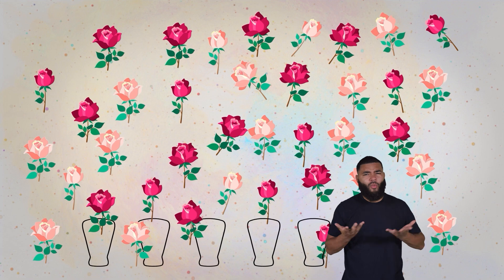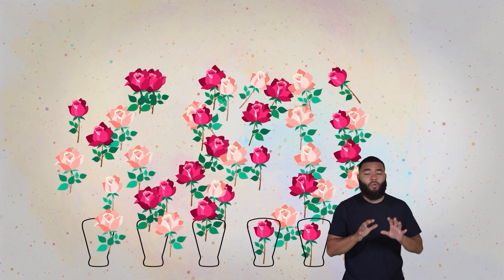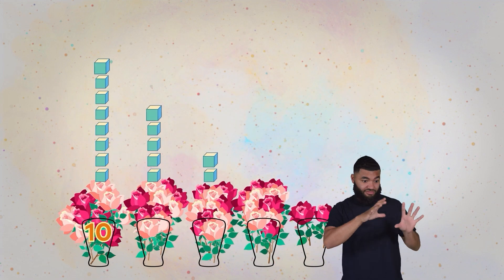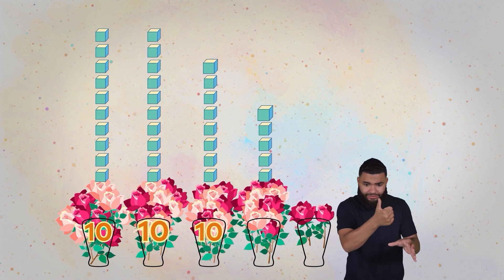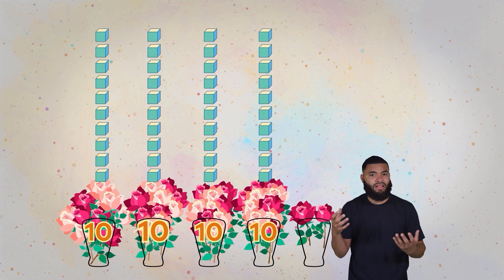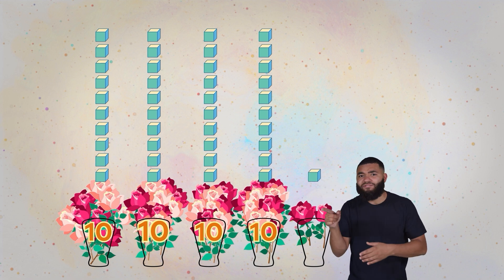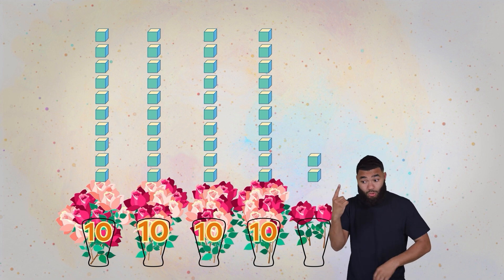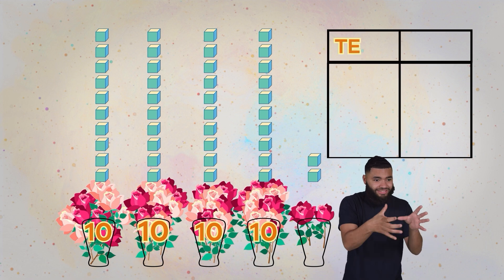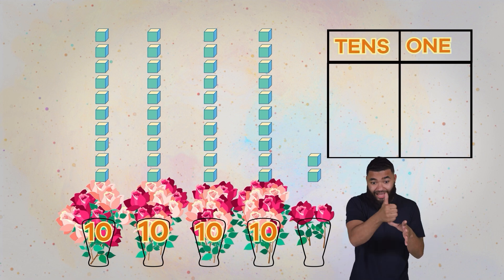Let's try another example, this time with flowers. What should we do first? Let's try grouping these flowers into groups of ten. One, two, three, four. How many ones do we have left over? One, two. So, there are four groups of ten and two ones left over.